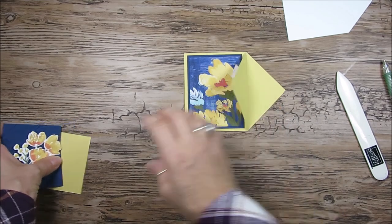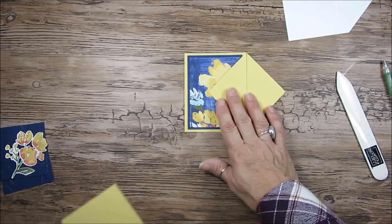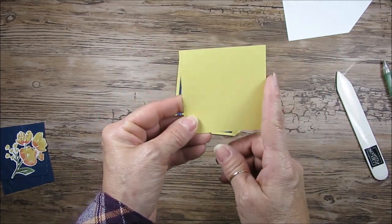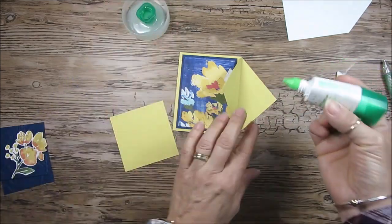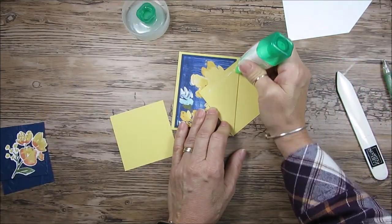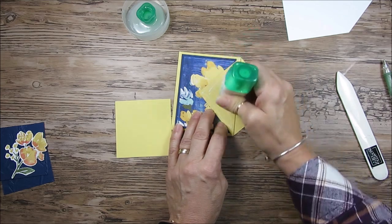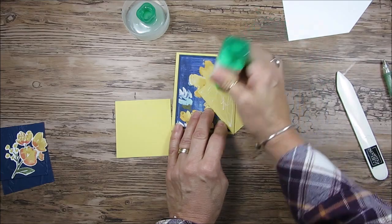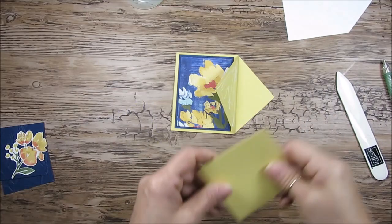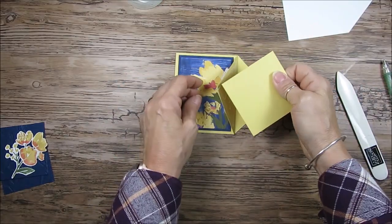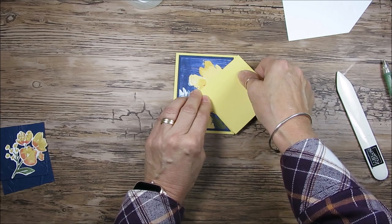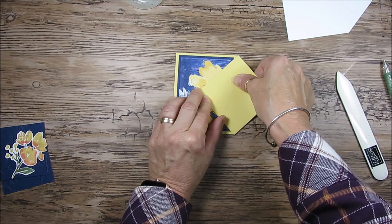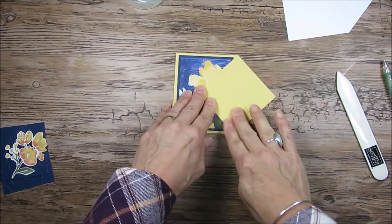Now for the base here I'm using the same color as the card base. So in this case it's So Saffron and I get a piece that measures three by three. I like to use Tombow glue so it gives me the chance to move it around if I'm not just right. I'm going to take my point and match this with my point. See how it matched all perfectly.